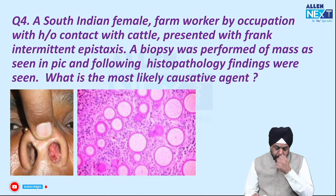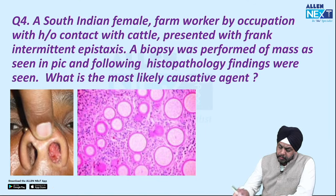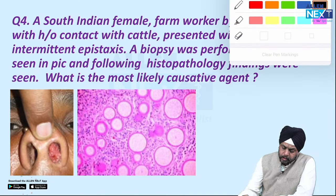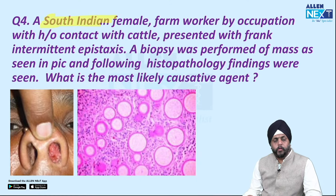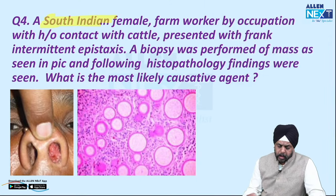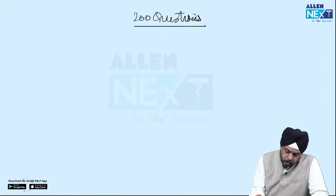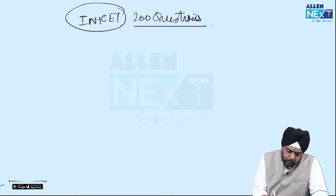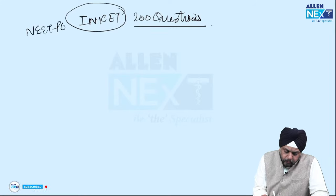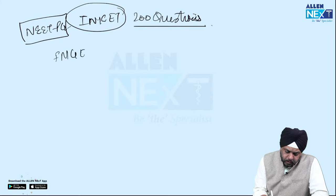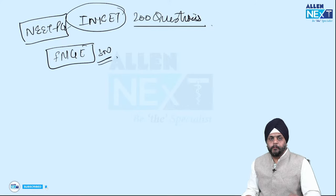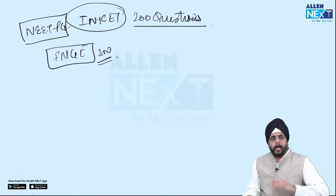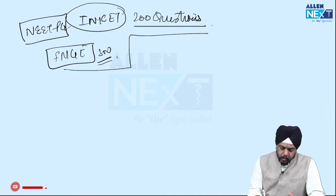Another interesting question is about a South Indian female. But before breaking down that question, I want to share an important exam strategy trick. You have 200 questions in your INICET exam — the same applies to NEET PG, and FMG has 300 questions. Most of you can clear these exams; you just have to apply some basic tricks. The basic trick is solving in rounds.